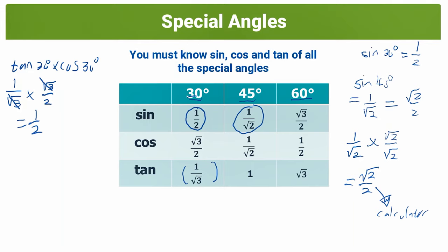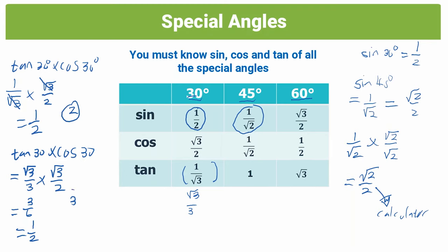However, what if you used root 3 over 3, the rationalized version of tan 30, instead? What would your steps have looked like? Well, that would be like this. Tan 30 times cos 30 would then give you root 3 over 3 times root 3 over 2. And now you're going to be adding an extra step, because you have to multiply in your thirds to then get 3, and then you have 3 over 6, and then you simplify to half. So I know it's only one extra step, because here we had two steps, and here we have 3.